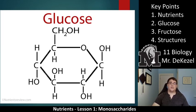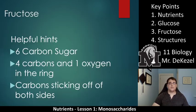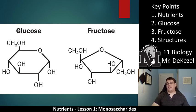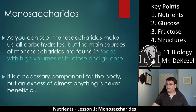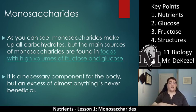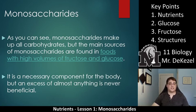The fructose molecule and the glucose molecule are shown beside each other — that's the picture you should have in your notes. Monosaccharides make up all carbohydrates; if you stack them together you'd have a very long carbohydrate chain. The main sources of monosaccharides are foods with high volumes of fructose and glucose, like sugary drinks and fruits. It is a necessary component for the body, but an excess is never beneficial and excess sugar can have dire consequences, especially in terms of heart disease.